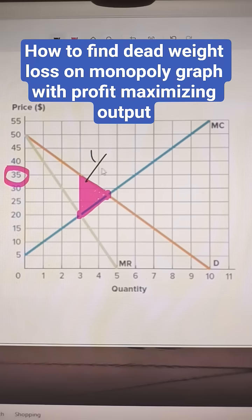So our deadweight loss is going to be one-half from 35 down to 20, so that's 15, times one and a half, so from 3 to 4.5, so that's 1.5.